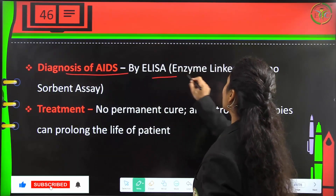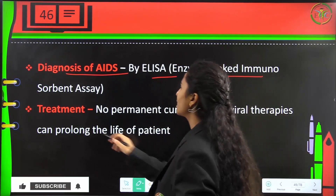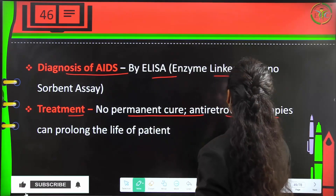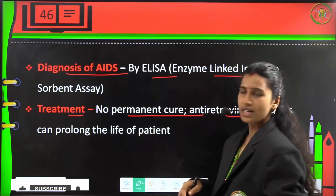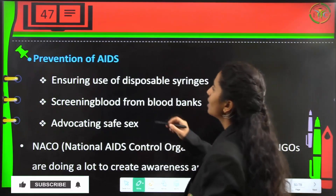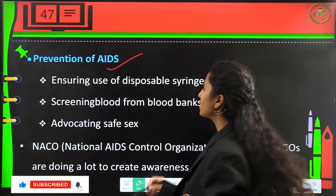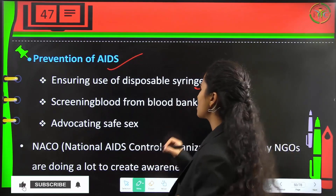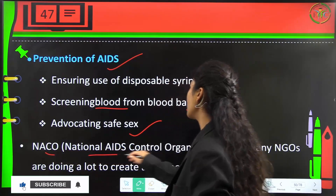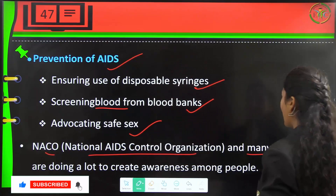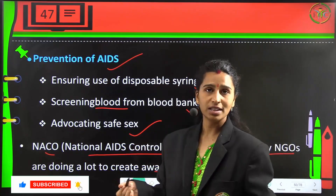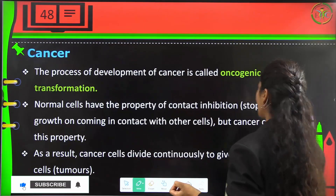Diagnosis of AIDS is by ELISA — Enzyme-Linked Immunosorbent Assay. There is no permanent cure, and antiretroviral therapies must be continued for the entire life of the patient. Prevention is better than cure. Prevention includes ensuring use of disposable syringes, screening blood from blood banks, advocating safe sex, and awareness programs by NACO (National AIDS Control Organization) and many NGOs about the seriousness of AIDS and HIV.